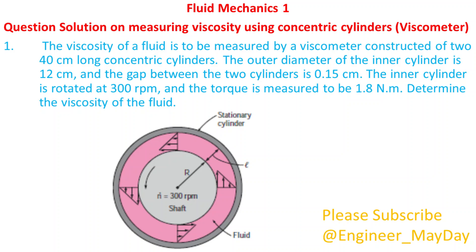The viscosity of a fluid is to be measured by a viscometer constructed of 240 centimeters long concentric cylinders. The outer diameter of the inner cylinder is 12 centimeters and the gap between the two cylinders is 0.15 centimeters. The inner cylinder is rotated at 300 revolutions per minute and the torque is measured to be 1.8 newton meters.